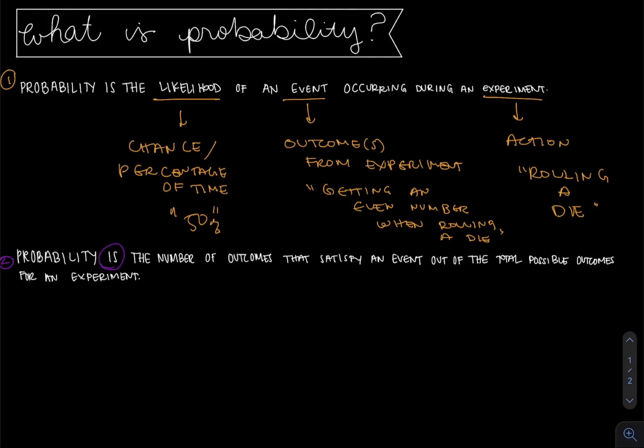Still feels stuffy. Reminder: is means equals in mathematics and a reminder out of stands for division. So rewriting this we have that probability is equal to number of satisfactory outcomes divided by total possible outcomes.